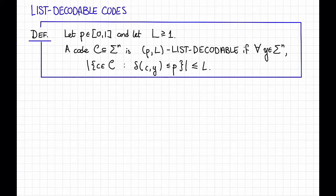Here's the definition of a list decodable code. Let P be a parameter between 0 and 1, and let capital L be an integer that is greater than or equal to 1. We say that a code C in sigma to the n is P, L list decodable if for all Y in sigma to the n the number of code words C in C that have relative distance at most P from Y is at most L.